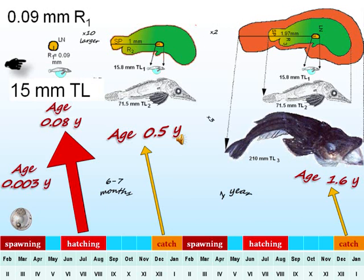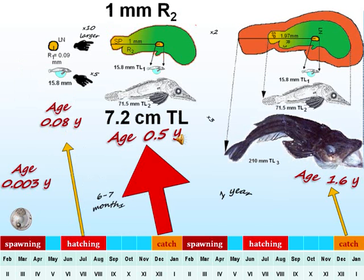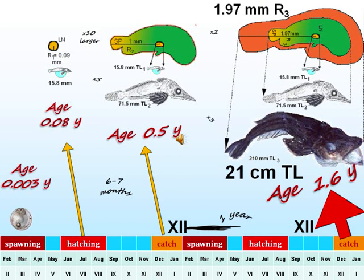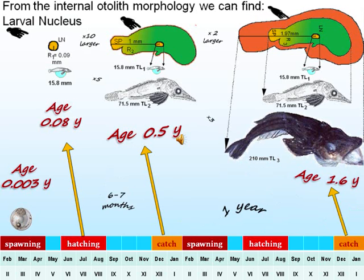Age data comes from increases in hearing stones — otoliths — and from observations and the catch. Hatching larvae have an otolith with 0.1 mm of radius and 50 mm of total length. Post-larvae have 7 cm of total length. Their otolith has 1 mm of radius. The next year we can find in December fish with 21 cm of total length. Their age is 1.6 years. Their otolith has a radius of 1.97 mm.